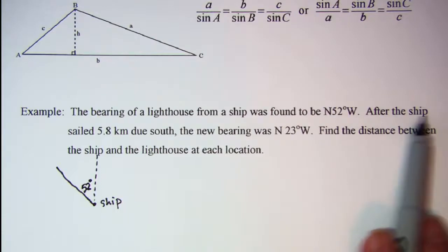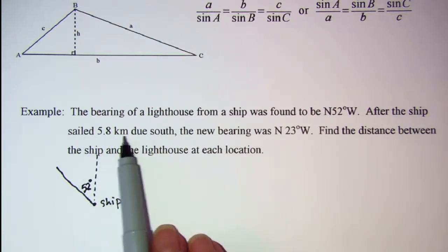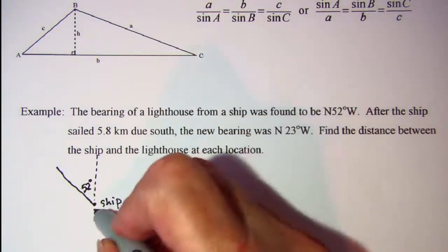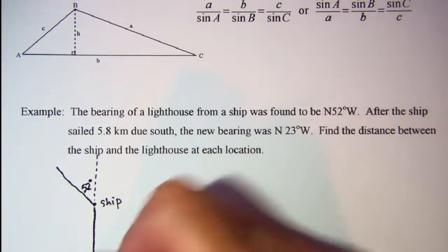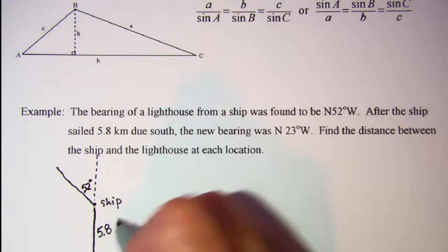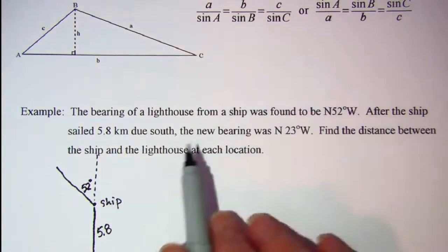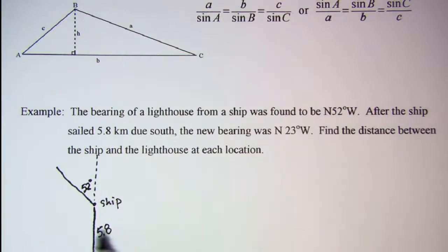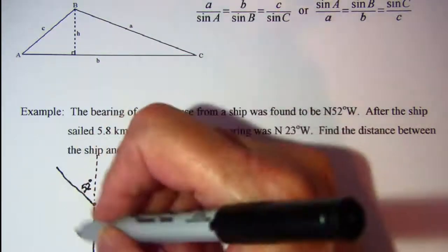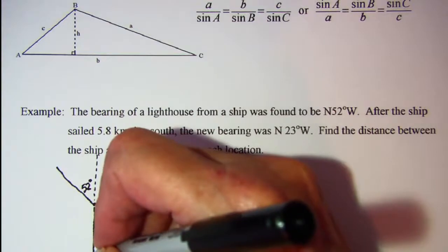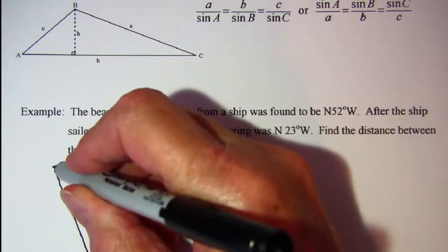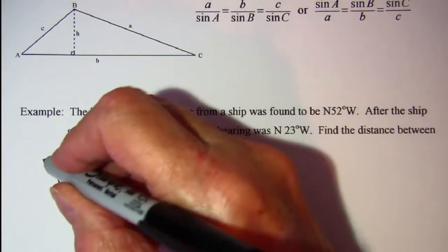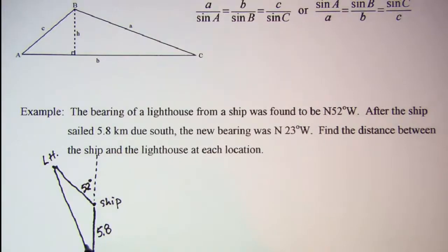Then after the ship sailed 5.8 kilometers due south. So now my ship has sailed due south, 5.8 kilometers. And we now have a bearing to the lighthouse of north, which we've already got as our dotted line there, 23 degrees west. So since I'm eyeballing my angle here, I'm going to assume that my lighthouse is right here, and this angle is my 23 degrees west of north, or north 23 degrees west.